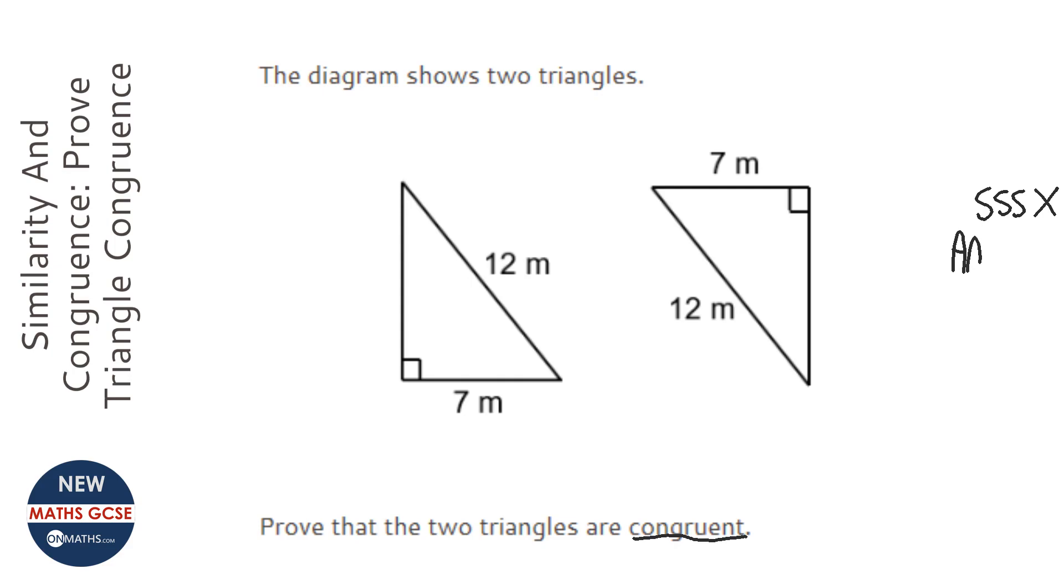The other one is AAS or ASA, which is angle, angle, side, angle, side, angle. Now, we're only given one angle, which is the 90 degrees, so we're not going to be using that one.